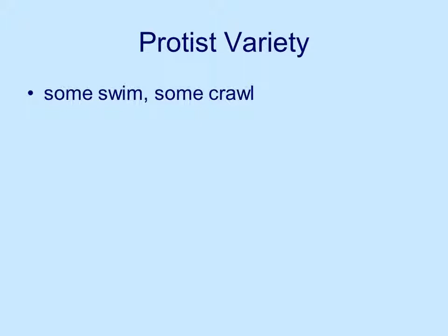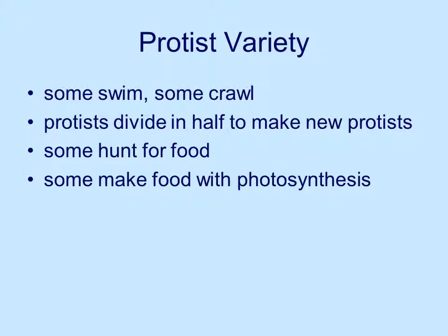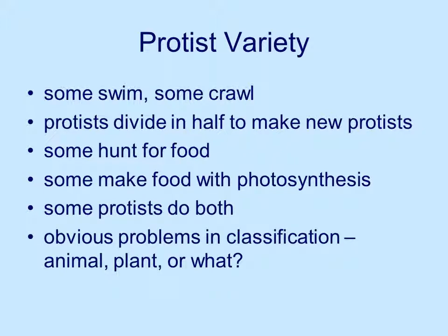What kinds of protists do we have? Some swim, some crawl. Protists can divide in half to make new protists — they can split their cells and come up with new creatures. Some of them hunt for food, and some make food with photosynthesis. The hunting for food is more of an animal-type behavior, while photosynthesis is more of a plant behavior. And then there are those protists that do both, which confuses the issue totally. So how do you classify them? You create a new classification: Protista.